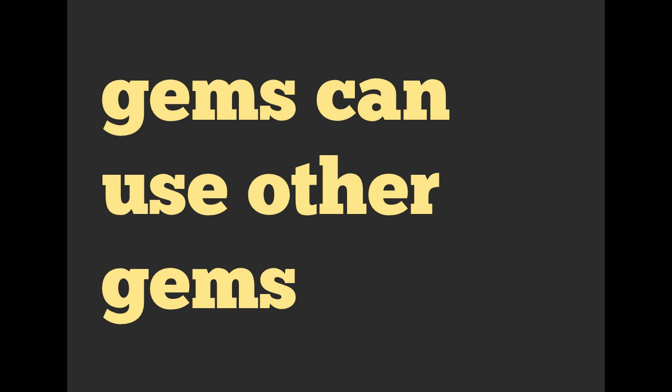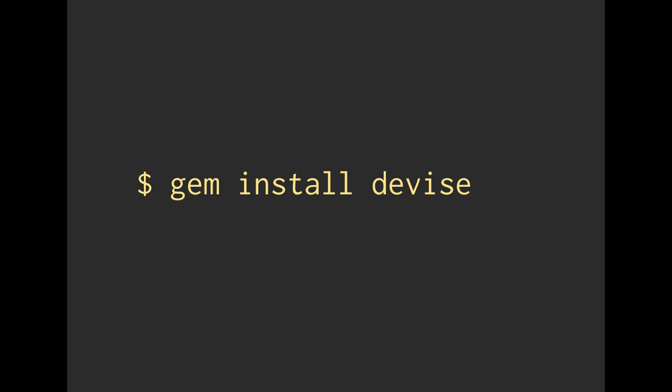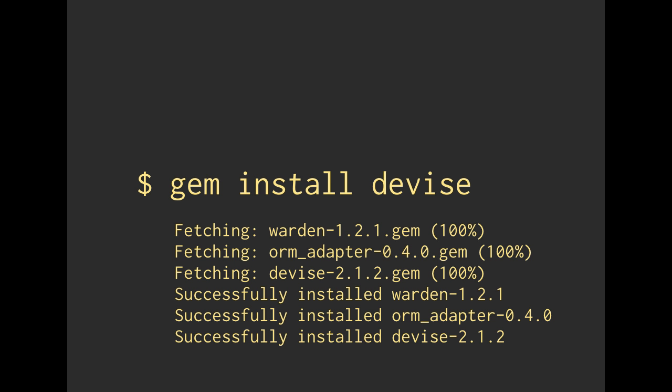It's very nice in that it lets lots of people share their code, and you can also update very quickly and easily. Gems can also use other gems. For instance, if you do gem install devise, you might get output showing it fetching warden 1.2.1, fetching orm_adapter 0.4.0, and fetching devise 2.1.2, and then successfully installing all of those — even though we only said install devise.